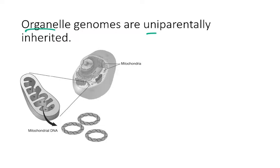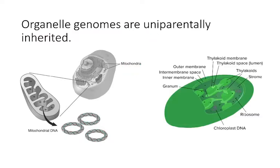Some examples of organelles that have what we call extranuclear DNA — because it's outside the nucleus — include the mitochondria and the chloroplast. Your mitochondria contain their own circular DNA molecules. What's really cool is that both the mitochondrial DNA and the chloroplast DNA exist because originally these organelles were free-living organisms that were engulfed by another cell. Since they were once free-living, they had their own DNA, and when engulfed, they maintained that original DNA.